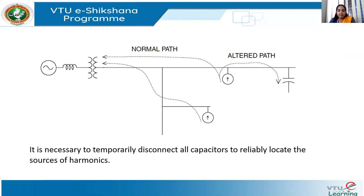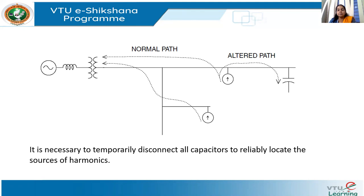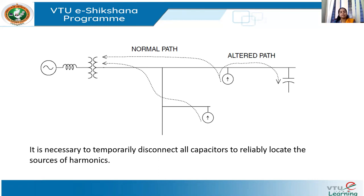To recap: we started with the fundamentals of harmonics, saw all parameters and harmonic indices, identified the main sources of harmonics in both industrial and commercial loads, and gave an example of a method used to locate harmonic sources in the system. Now we are moving on to the next topic: system response characteristics.